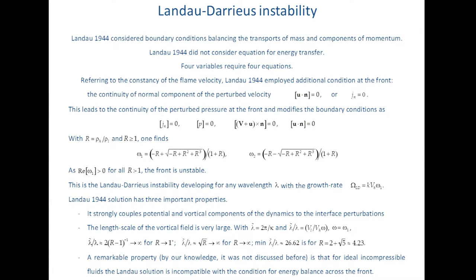If you look at the Landau-Darrieus instability and at the structure of the flow field, we see that this solution has three important properties. First, it has strongly coupled potential and vortical components of the dynamics and the interface perturbation. The characteristic length scale of this vortex field is very large — in fact, it approaches infinity when the density ratio approaches one. It also approaches infinity when the density ratio approaches infinity, and has a typical maximum size at a specific value of the density ratio. However, a remarkable property is that the Landau solution for ideal incompressible fluid is incompatible with the condition for energy balance across the front.